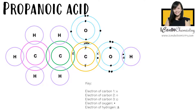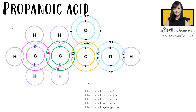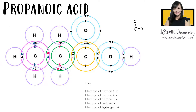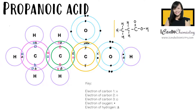What about propanoic acid, which has three carbons? Similarly, there is one carbon in the carboxyl functional group, so we just need to add two more carbons — now there are three carbons in total. The carbons will then fulfill the octet rule by using remaining electrons to form bonds with hydrogen. This is the dot-and-cross diagram of propanoic acid. Let's replace each electron pair with a bond — we have achieved the structure of propanoic acid.